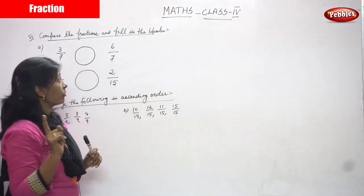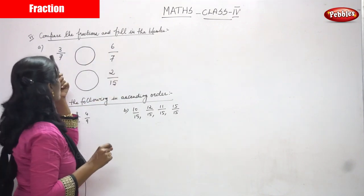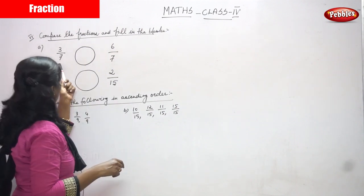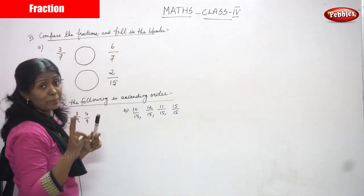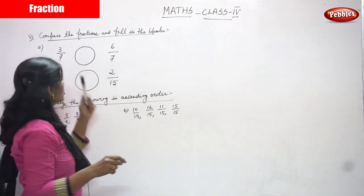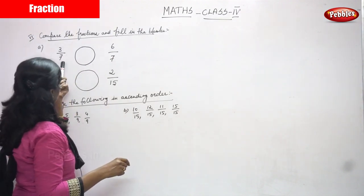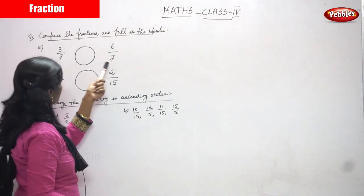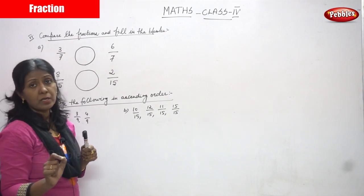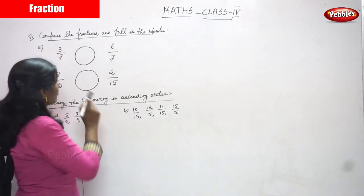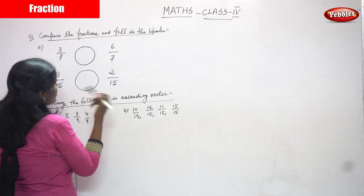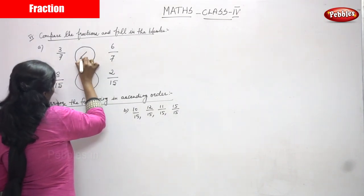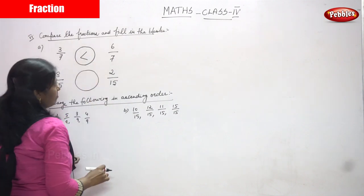So first, you have to look at the denominator only. In both fractions, 3 by 7 and 6 by 7, three is a numerator and seven is a denominator; six is a numerator and seven is a denominator. In both fractions the denominators are the same, so now you compare the numerators: 3 and 6. Six is greater, so 3 by 7 is less than 6 by 7.